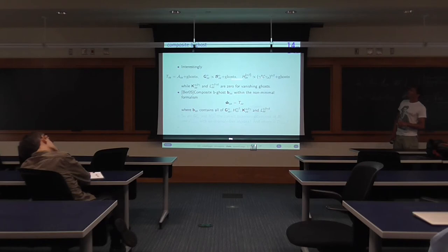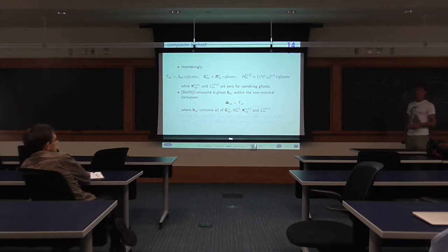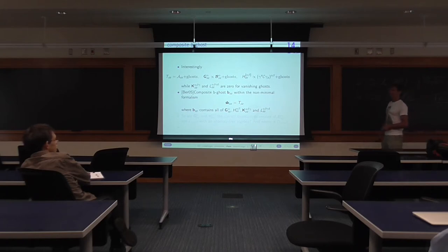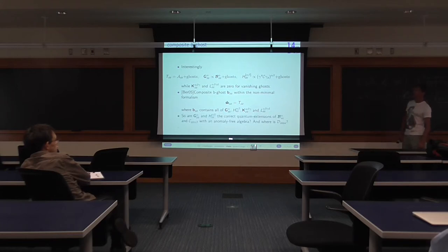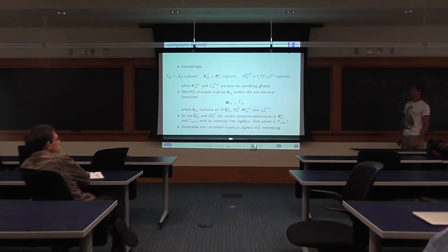Note that none of these operators contains the Siegel operator D. So D is still missing — only A, B, C are there. Berkovits noted that already when introducing these operators, giving a footnote that it's interesting that the Siegel operators appear there. But that was all about it. So the natural question is: are G and H the correct quantum extensions of B and C? Do they give an anomaly-free algebra? And where is D? The first answer is that with this naive extension, the anomalies are not cancelled. But I will show you where D is, because the classical algebra is still interesting to some extent.